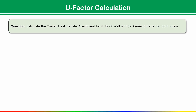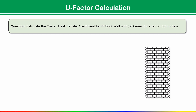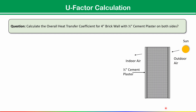Now for the U-factor calculation, here is a question: calculate the overall heat transfer coefficient for a 4-inch brick wall. Heat transfers from outside to inside the room through this wall. The wall consists of outdoor air, then half-inch outside cement plaster, then the 4-inch brick wall, then half-inch inside cement plaster, and finally indoor air. Each of these layers resists some amount of heat.